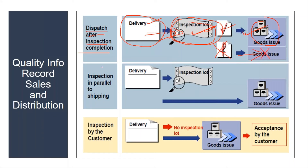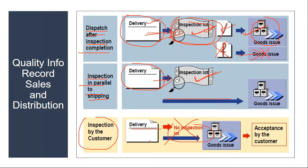Another scenario is inspection in parallel to shipping - they create the outbound delivery, the inspection lot gets created, but they deliver the product to the customer even before completion of the quality inspection. They don't wait for the quality inspection to complete. Another scenario is inspection by the customer - in this case there is no inspection lot at all, the inspection lot will not get generated. They directly create the outbound delivery and post goods to the customer.